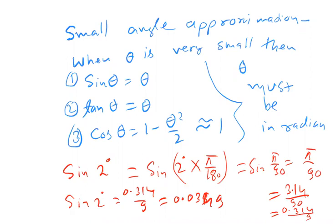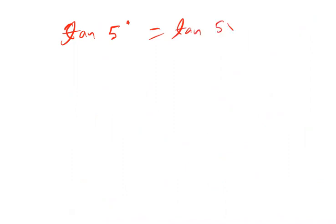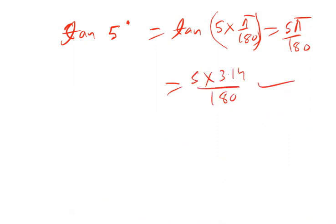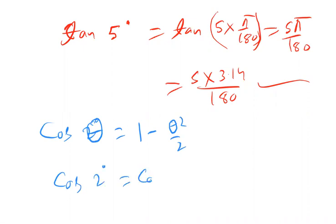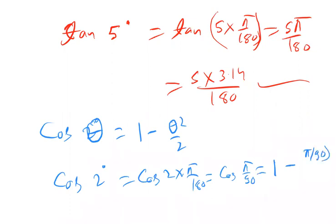Can you see this idea? If it is 5 degrees: 5 × π/180 = 5 × 3.14/180. Similarly, cos 2 degrees equals cos(2 × π/180) = cos(π/90), which equals 1 minus (π/90) squared over 2. This formula gives a very close approximation.